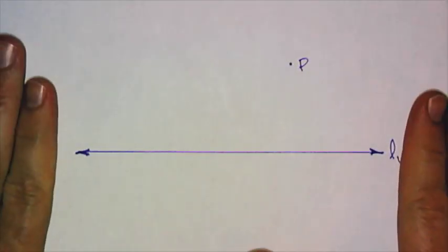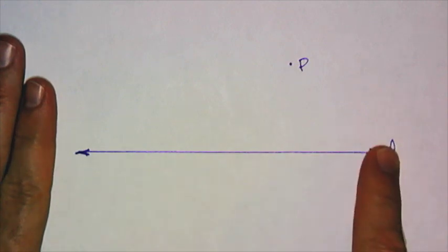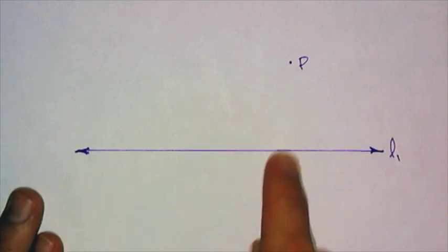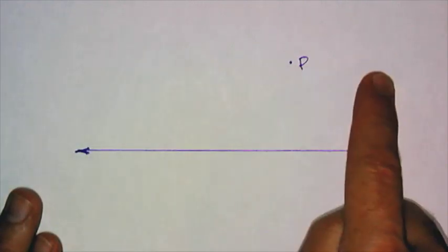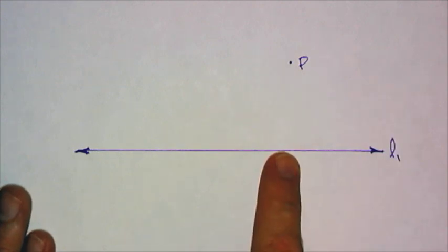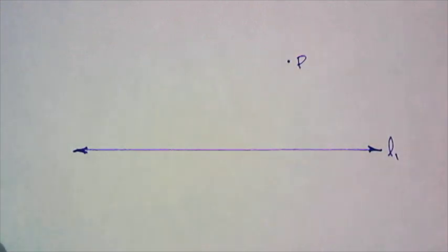So, let's start. Here I have line 1 and I have point P, which is not on the line. And I need to construct an additional line through P, which is parallel to line 1. So, let's think about what I'm going to do.